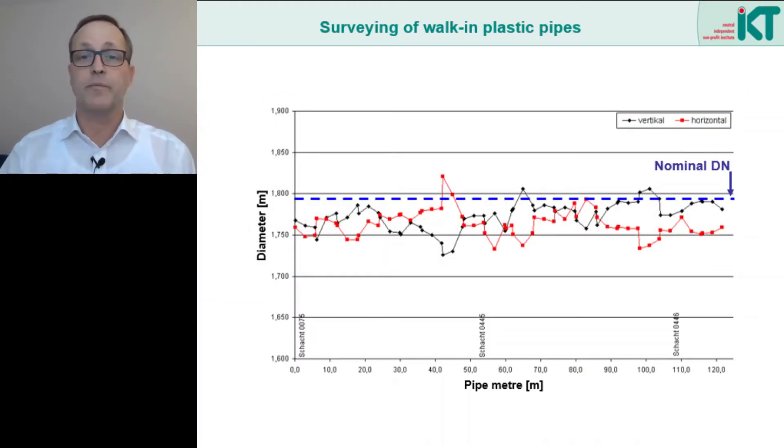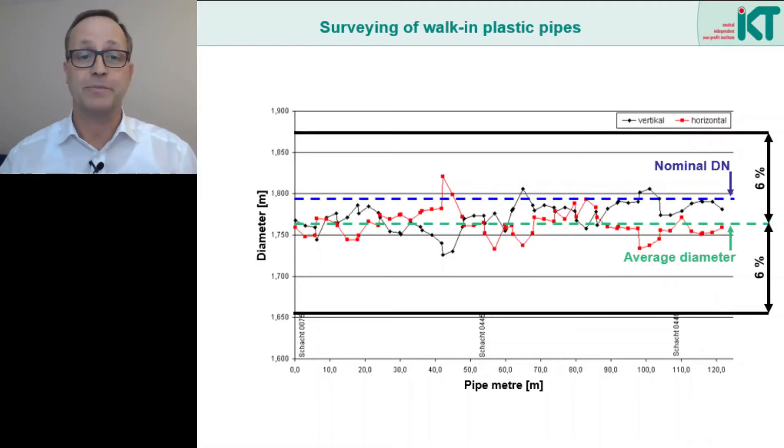Here we see the results of a diameter measurement for a 120 meter long sewer section. According to the records, the nominal diameter was 1800 millimeters. The black line connects the measured values for the vertical diameter, the red line the measured values for the horizontal diameter. If we put the mean value of all measured values as a green line in this diagram, we see that the mean value is clearly below the nominal value. Obviously, the mean inner diameter of the pipe is slightly smaller than the nominal diameter. This is not a bad thing, you just have to know it.